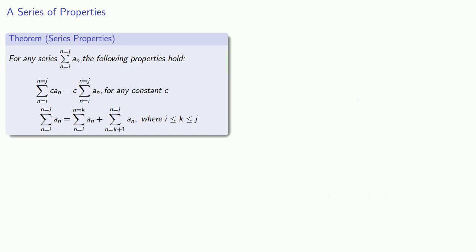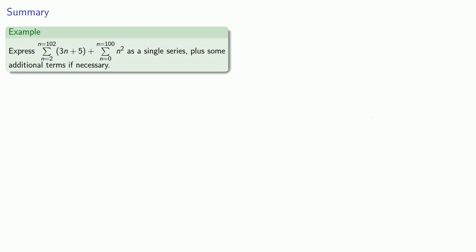So series behave a lot like definite integrals, which shouldn't be any surprise at all, because a definite integral is a sum. And a couple of the important properties here for any series at all, the following properties hold. The sum of constant times term of the series is constant times series for any constant c. And any series at all can be split at any point k in between the beginning and end. And these properties are useful if we try to combine two series into a single series.